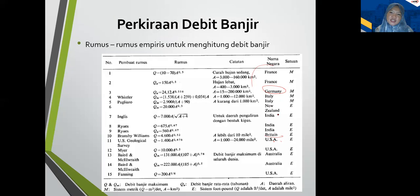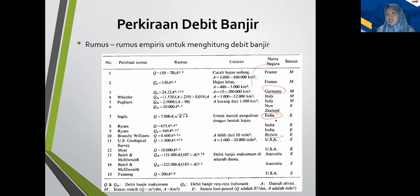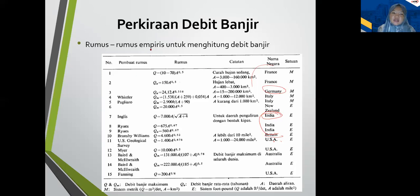India misalnya adalah sub-arid — sudah mengarah ke empat musim, antara tropis dengan empat musim, dia punya musim dingin tapi tidak sampai bersalju. Australia juga semi-arid dengan arid, sudah di luar dari tropis. Otomatis rumus empiris ini tidak bisa digunakan untuk Indonesia.